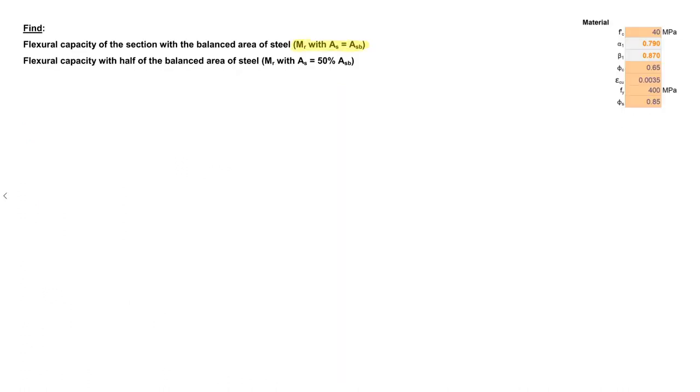Alright, now we want to find the flexural capacity of the section with the balanced area of steel ASB, and I've already given us the stress block factors up here for 40 MPa. So how can we find ASB? Well, maybe we want to use rho balance. After all, it is ASB over BD, so if we find rho balance then we can just back calculate ASB. But there's a caveat: what if our depth of our stress block is greater than the depth of the flange?